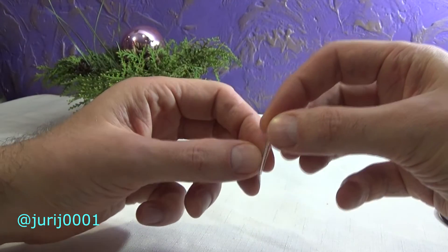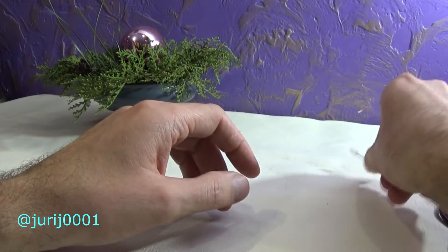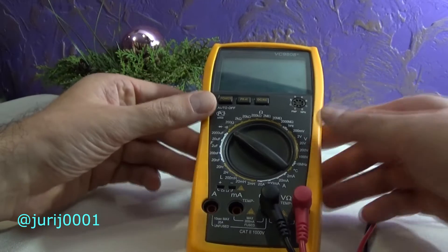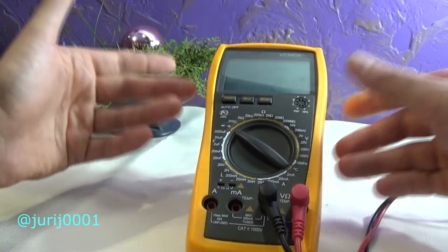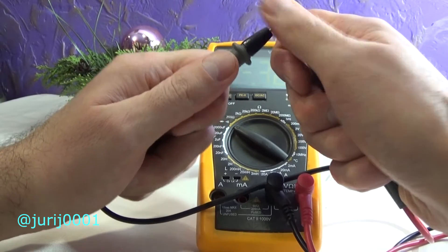If you want to check the LED then you need to do this. You will need a multimeter. You set up the diode testing mode.